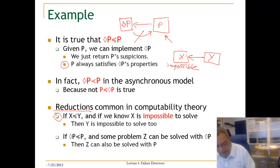Here is the other example. We know that P can implement Diamond P, and for some problem also we know that Diamond P can implement Z. Then of course P can be used to implement Z.